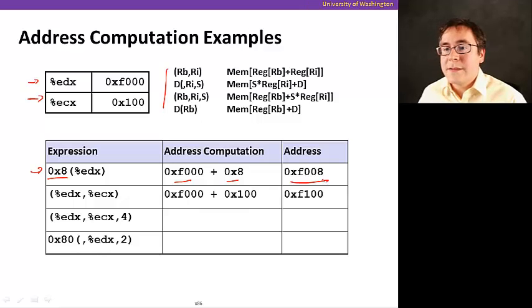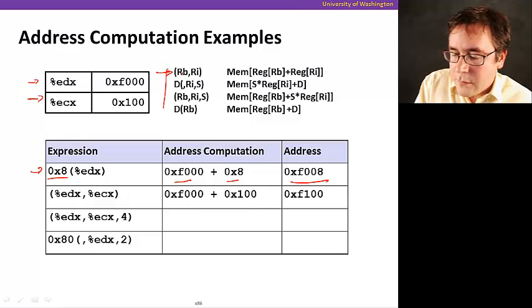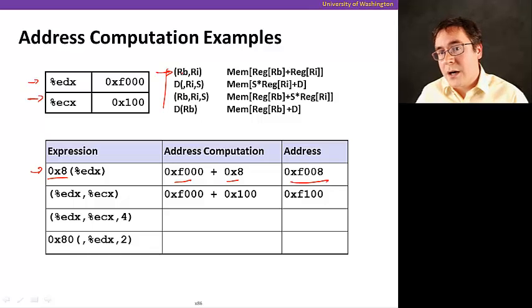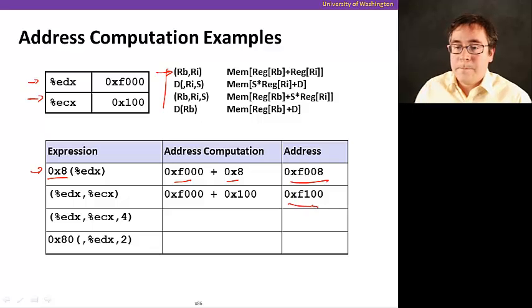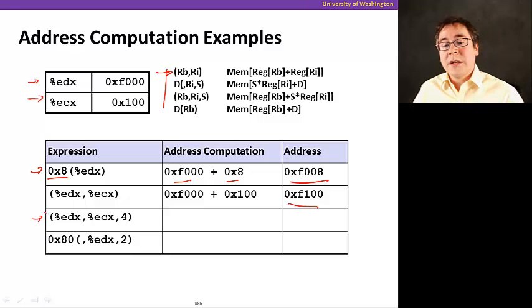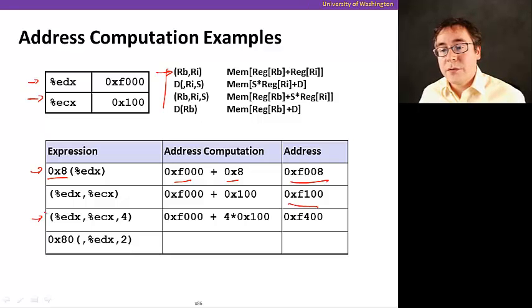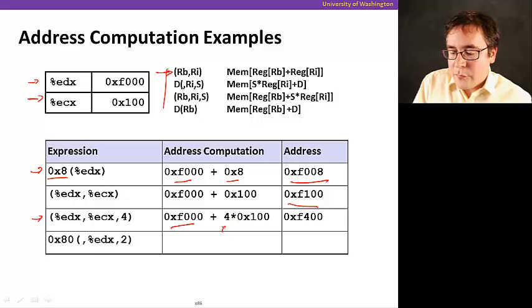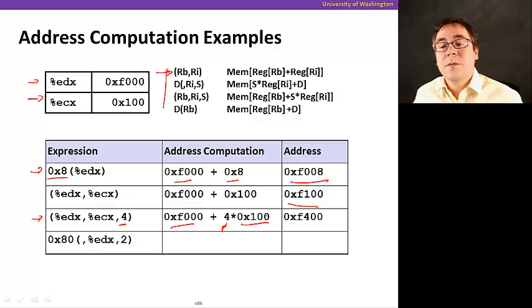Now, the next one is using this form here, which is just going to be RB plus RI. In this case, just EDX plus ECX. That's what we get here, F100. Now, the third example here is using a scale factor. And what it's going to do is it's going to get EDX and add it to four times, just because we had four here, ECX, which is 100. So, in the end, we get F400.